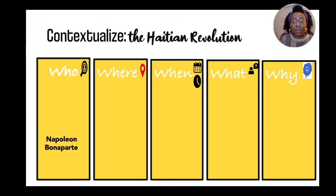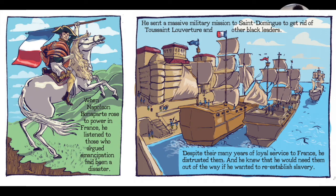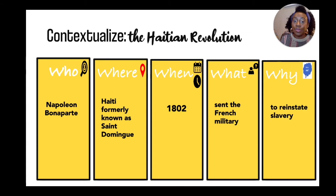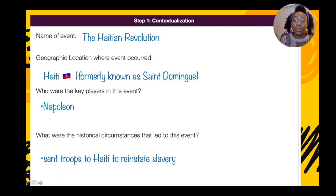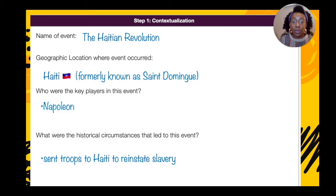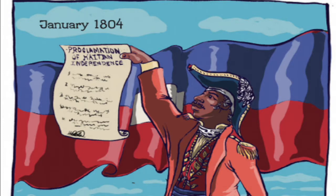Let's do another example. Who: Napoleon Bonaparte. Where: Haiti, formerly known as Saint-Domingue. When: 1802. What: sent the French military to reinstate slavery. Same for the name and geographic location. Who are the key players? Napoleon. The historical circumstances that led to this event: he sent troops to Haiti to reinstate slavery.